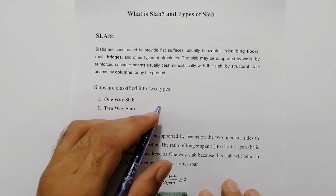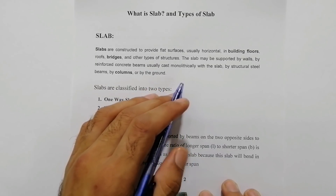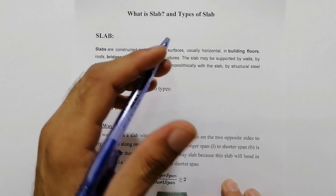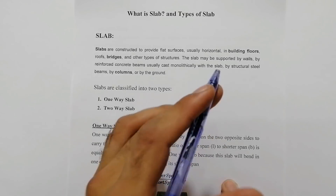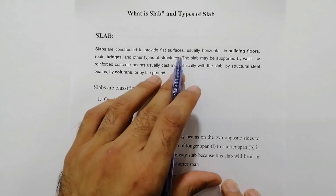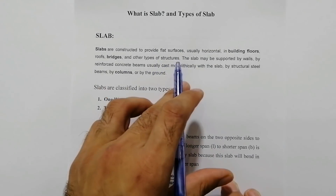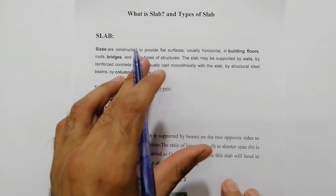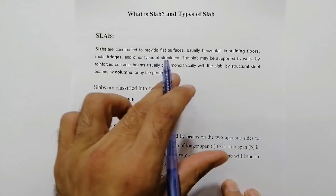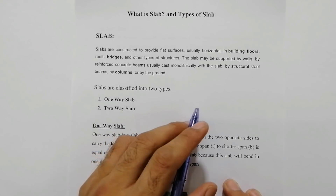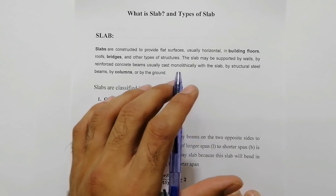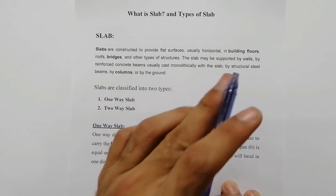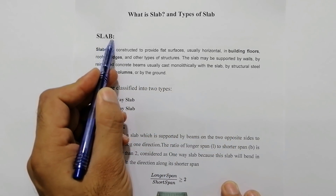Assalamu alaikum friends, welcome back to Civil Engineers YouTube channel. Today in this important video lecture I'm going to talk about what is RCC slab and types of slabs, because many civil engineering students are confused about the types of slabs and the main difference between one-way slab and two-way slab. Watch this video from start to end to learn something new. Please like the video and subscribe the channel for more civil engineering updates.